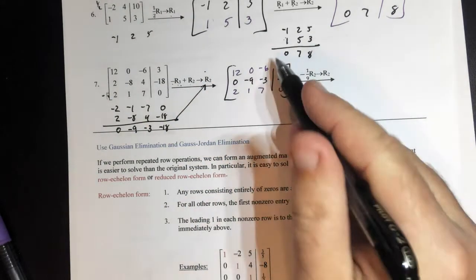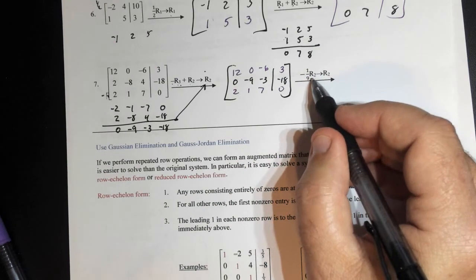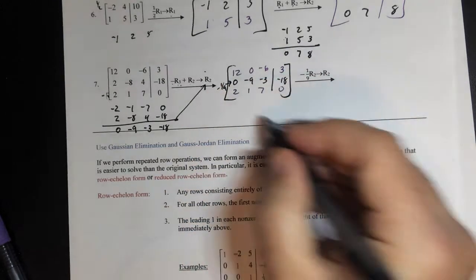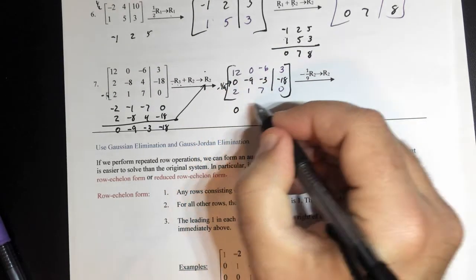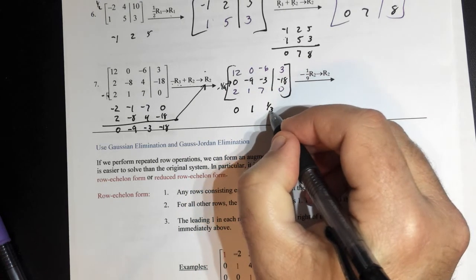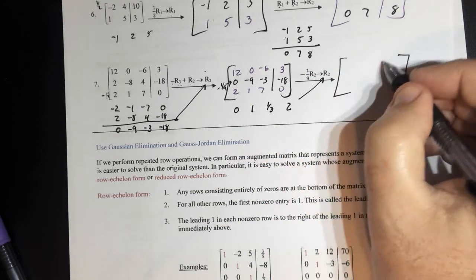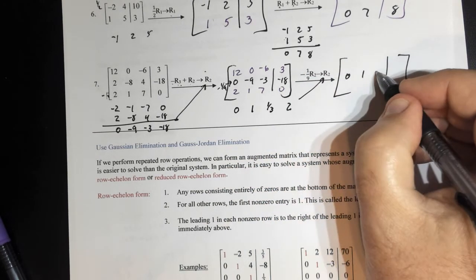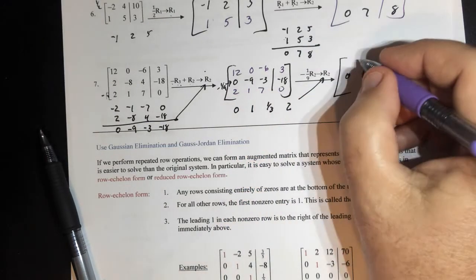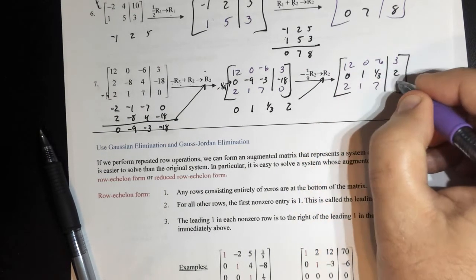Now we're going to take this answer and do these steps with it. This says to multiply R2 by negative 1/9th — just R2. So negative 1/9th gives us 0, 1, 1/3, 2. And where is it going to go? To R2. If I put it where it tells me to put it: 0, 1, 1/3, 2. Everything else then stays the same: 12, 0, negative 6, 3; and 2, 1, 7, 0. And I've completed what it asked me to do.